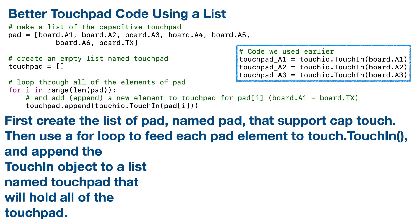Now in the last example, we used a separate line of Python code to create a capacitive touchpad — like touchpad_A1 equals touchio dot touch_in, and then we passed in board dot A1, and then we did the same thing for the other two pads, A2 and A3. But I'm going to show you there's a more efficient way to set this up using lists, and there's going to be an even bigger payoff when we want to detect a touch in our while true loop.